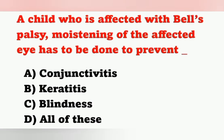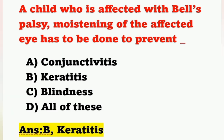Next question: A child affected with Bell's palsy — moistening of the affected eye has to be done to prevent: Option A: Conjunctivitis; Option B: Keratitis; Option C: Blindness; Option D: All of these. Complications of Bell's palsy include corneal drying, keratitis, and ulceration. The correct answer is Option B — moistening of the affected eye is done to prevent keratitis.